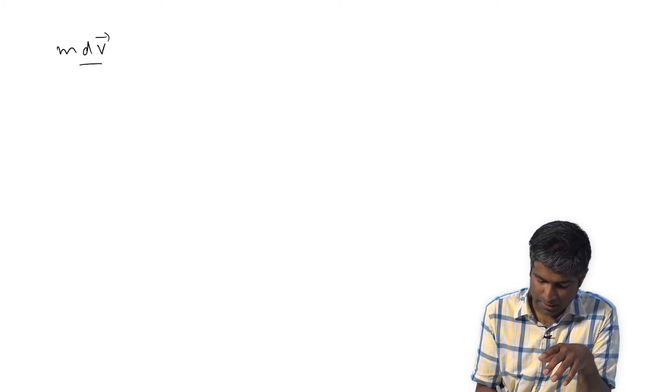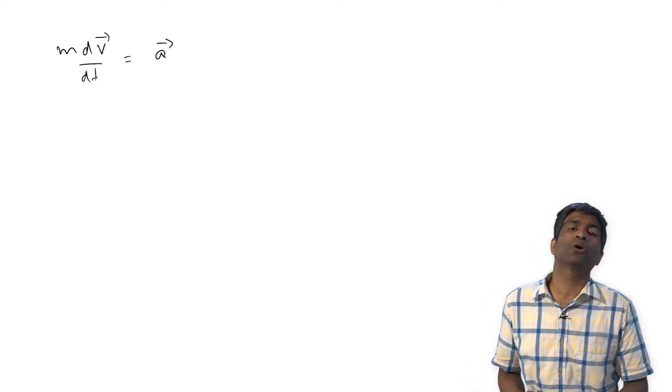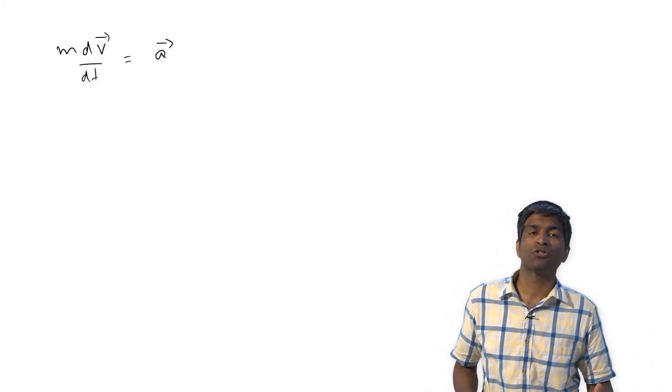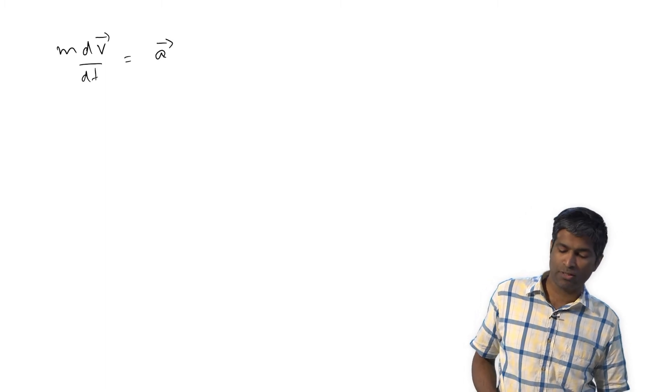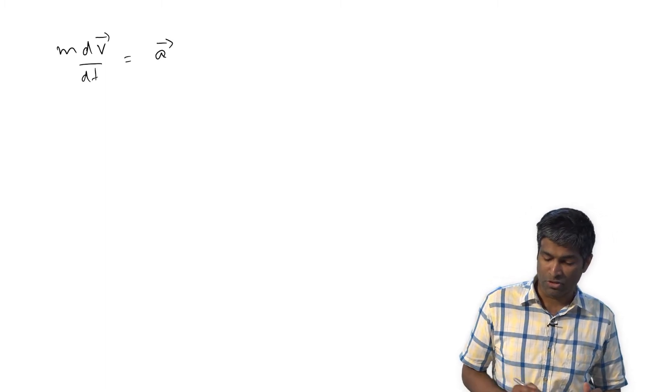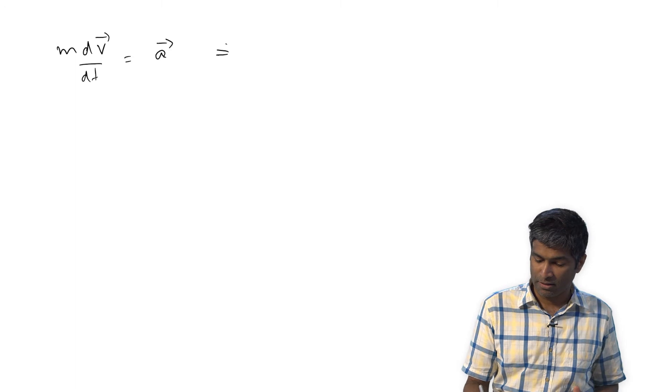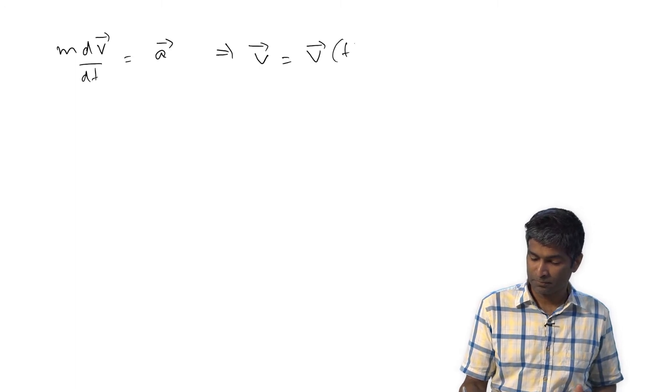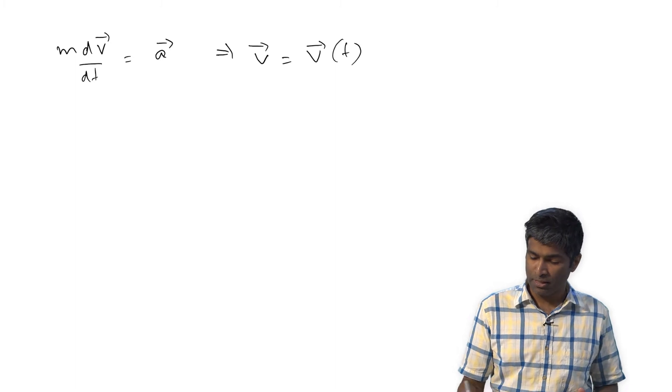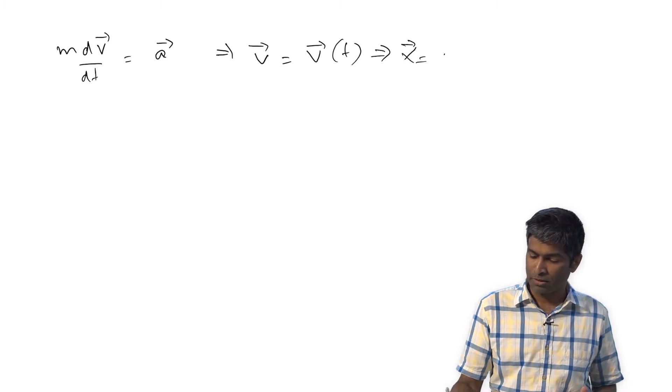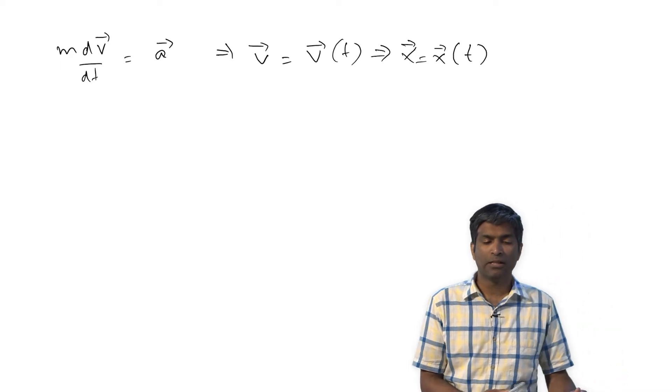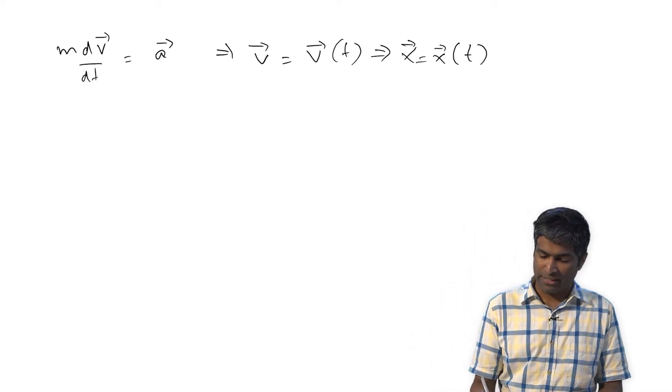I can just write m dv/dt equals a, and this a might be 0 in the horizontal direction and equals minus g in the vertical direction. I can just integrate this equation to get my velocity as a function of time. That's my solution, and this will give me my position as a function of time. One can do that by just integrating.